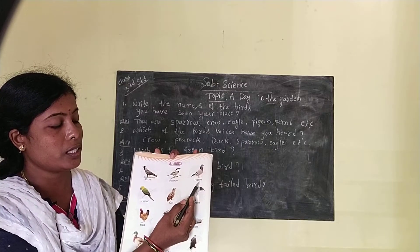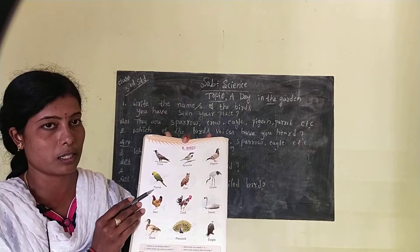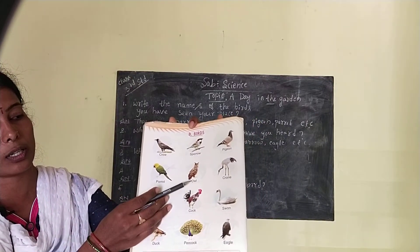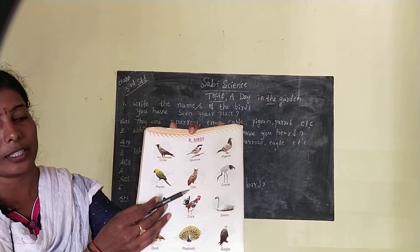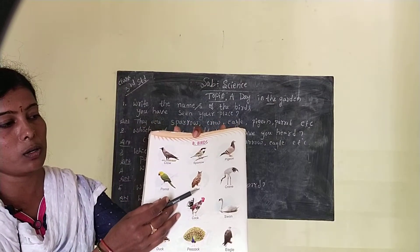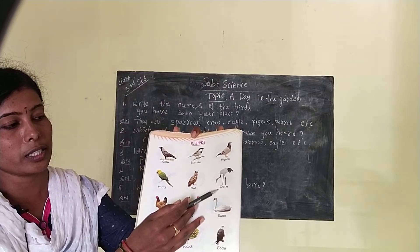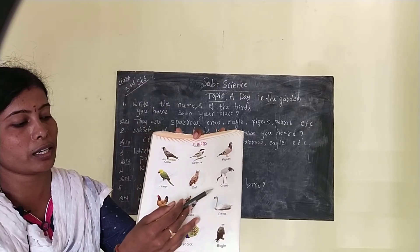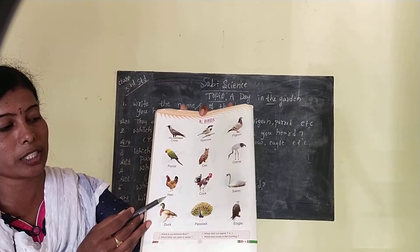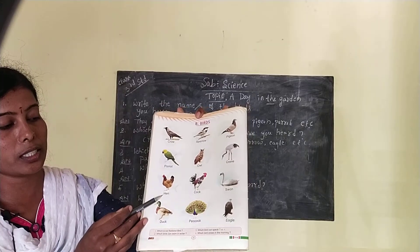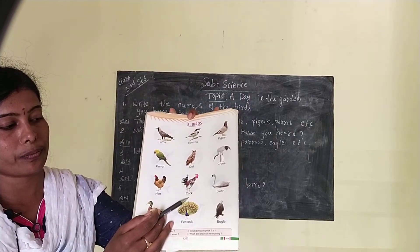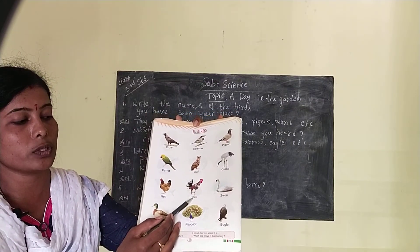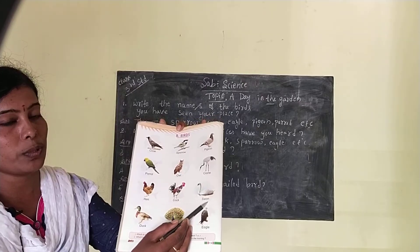Which bird is this? This is parrot — P-A-R-R-O-T, parrot. Next, which bird is this? This is owl — O-W-L, owl. Next, which bird is this? This is crane — C-R-A-N-E, crane. Which bird is this? This is hen — H-E-N, hen. Which bird is this? This is cock — C-O-C-K, cock.